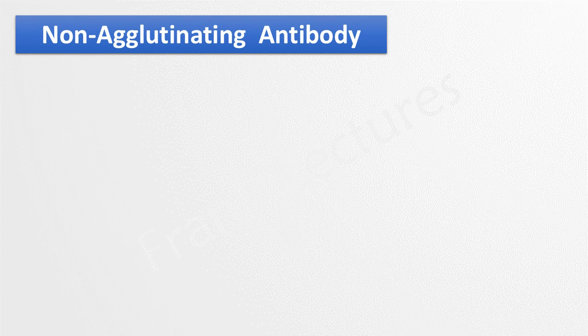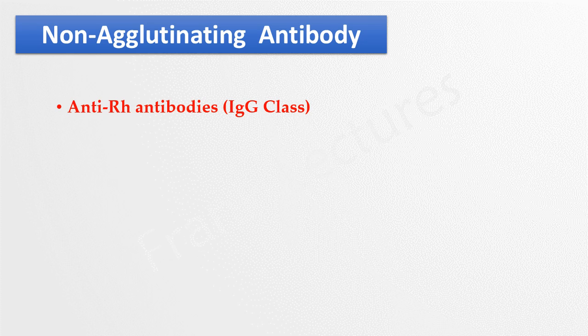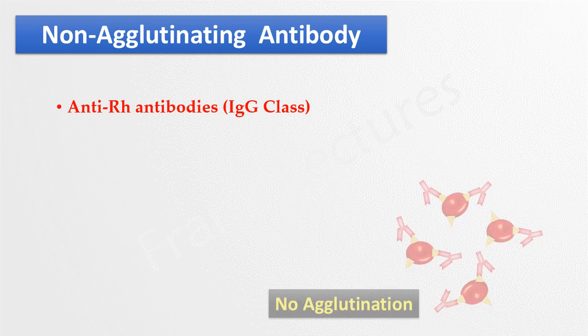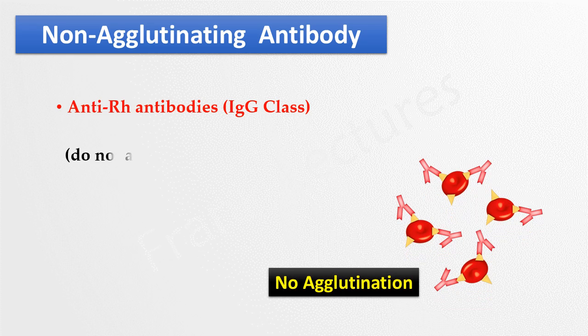One very important example of a non-agglutinating antibody is anti-Rh or anti-D antibodies. Recall that these antibodies belong to the IgG class. Anti-Rh antibodies bind to the Rh antigen on RBCs but they do not agglutinate them in vitro.